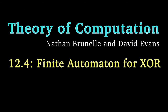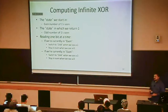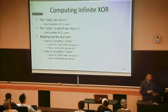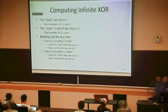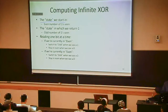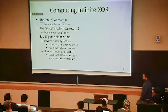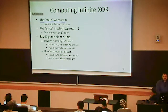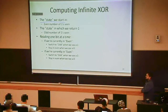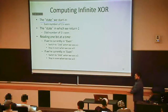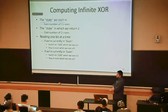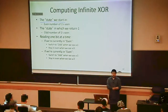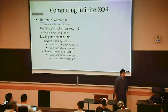We're going to look at an example of one of these finite state automata for this infinite XOR function. The first thing we want to do is figure out what our states should be and which one should be the start state. When we have an XOR, when we're trying to compute an XOR, we're asking this question: are there an even or an odd number of ones in this string?